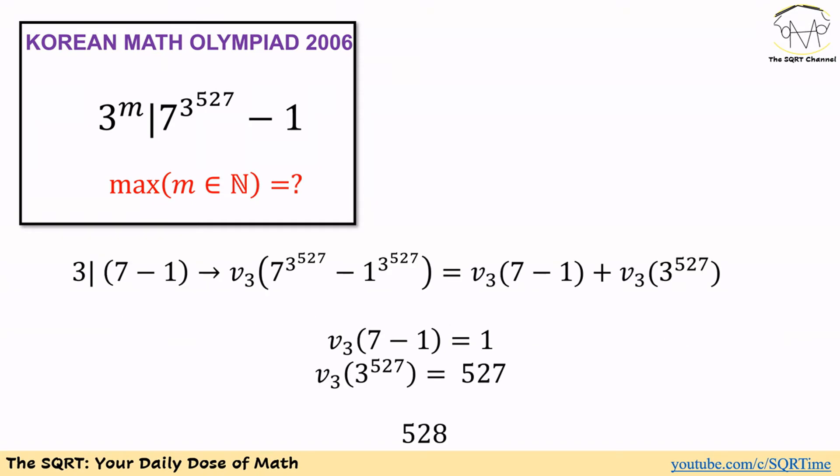From here, things are very simple. We know 3 divides 7 minus 1, and 3 to the power of 2 doesn't divide 7 minus 1. So the maximum power of 3 that divides 7 minus 1 is 1.